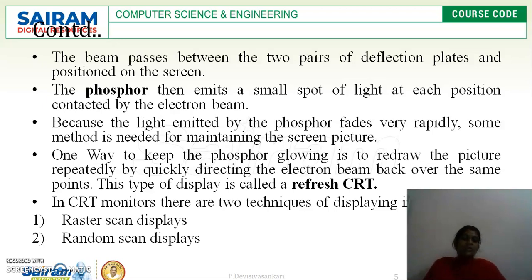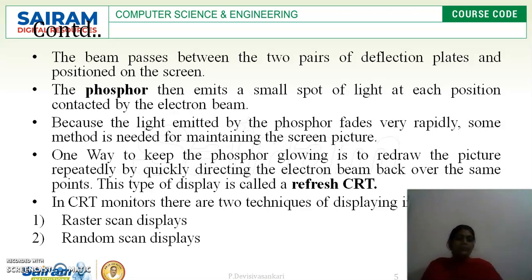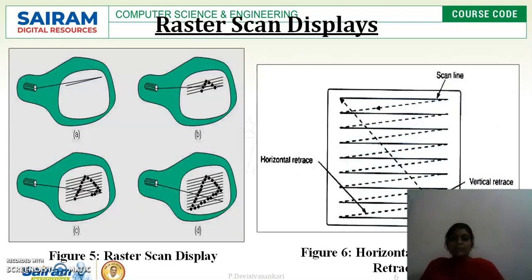The CRT monitor uses two different types of techniques. The very first technique is called raster scan display and the other one is random scan display. By the name itself, raster scan implies it uses a frame buffer, and random scan implies the electron beam randomly touches any point on the screen and starts producing pictures. Let us see them one by one. The very first one is raster scan display.